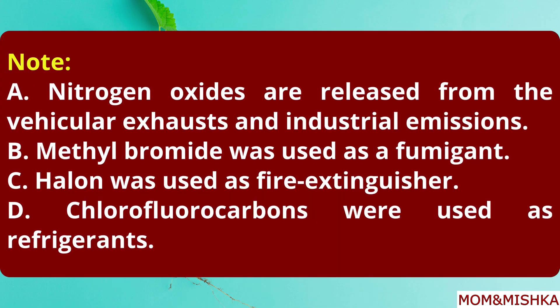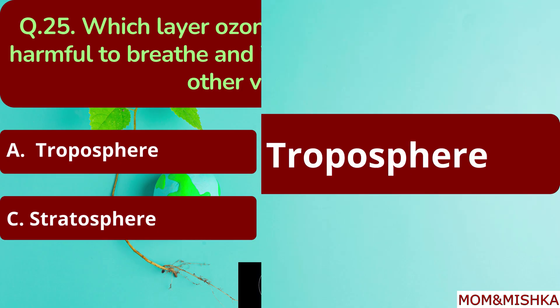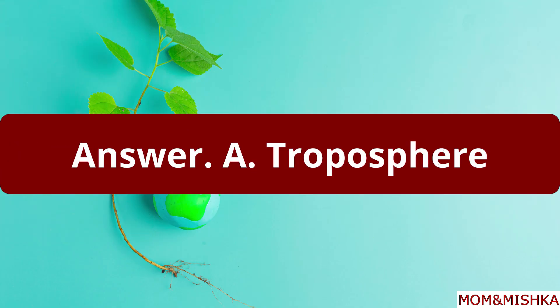Here are some important points about ozone-depleting chemicals. You may take a note of it. Which layer of ozone is an air pollutant that is harmful to breathe and damages crops, trees and other vegetation? Troposphere ozone. Option A.